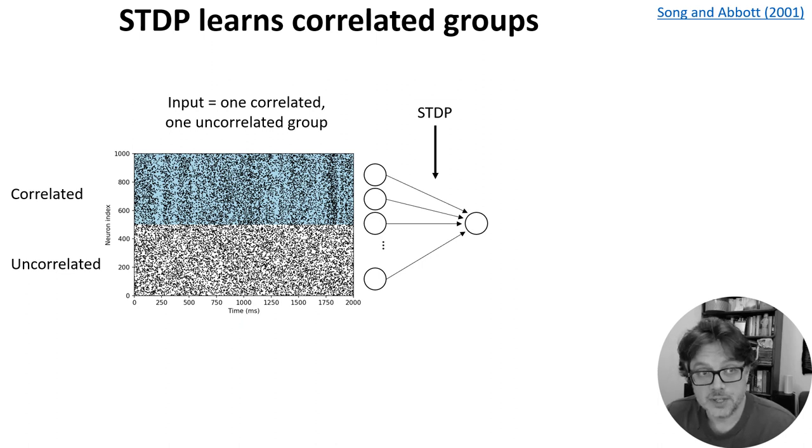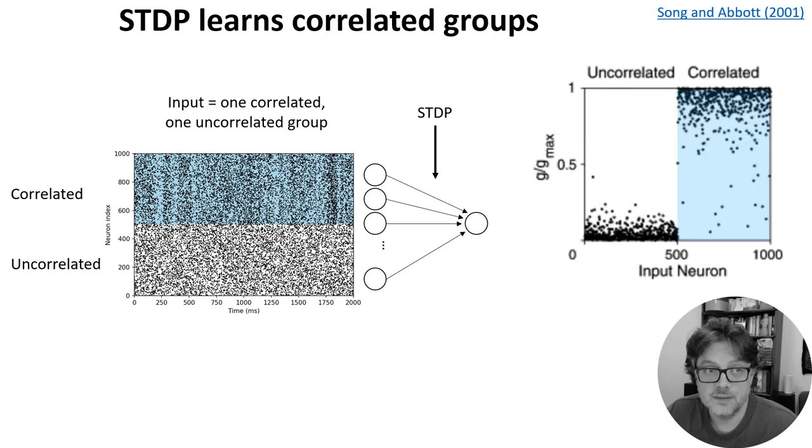In this next model, we divide input neurons into two groups. One group with a white background are firing uncorrelated spikes. The other group with the blue background are firing correlated spikes. After STDP, the weights of the neurons in the uncorrelated group go to zero, while the weights in the correlated group go to the maximum value. And this makes sense biologically because being able to pick up on input correlations in your environment is very useful.